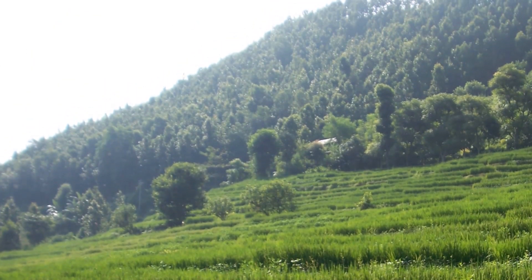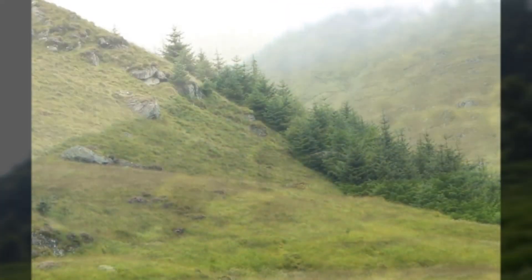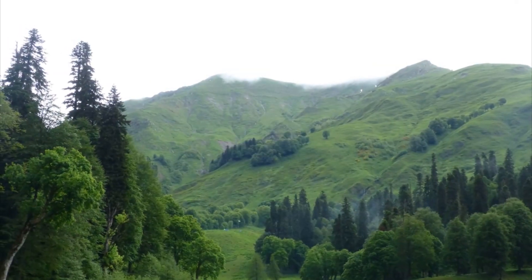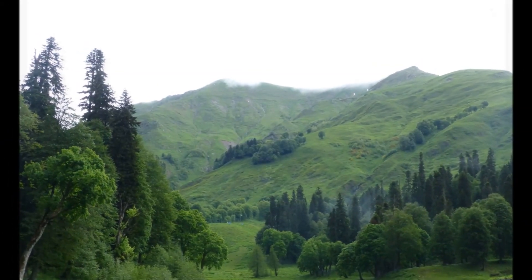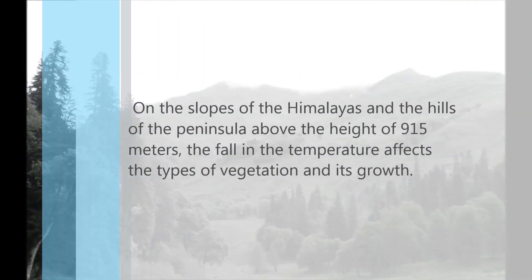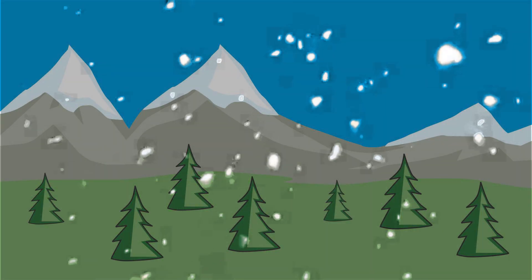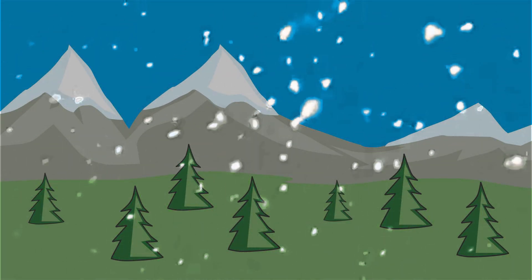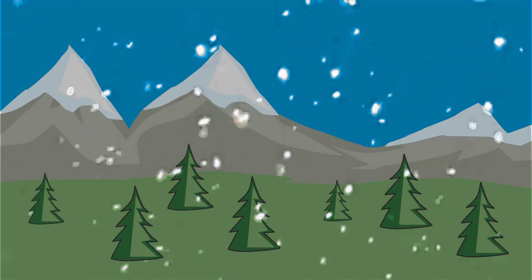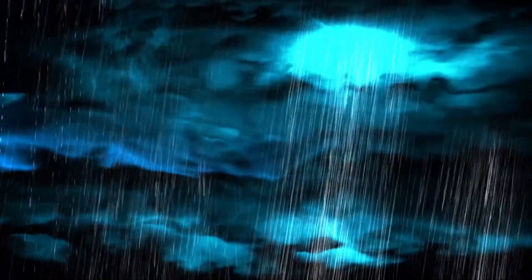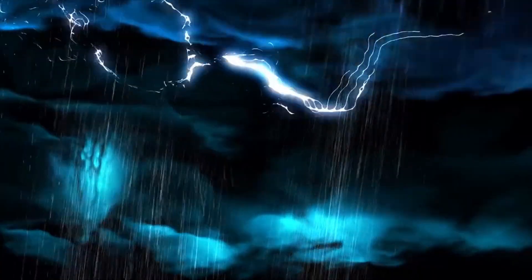Similarly, variation in the duration of sunlight can lead to a change in the flora and fauna around that place. There are many reasons for such variation, such as differences in latitude, altitudes, seasons, and durations of the day. Let's now quickly see how precipitation or rainfall influences natural vegetation and wildlife.